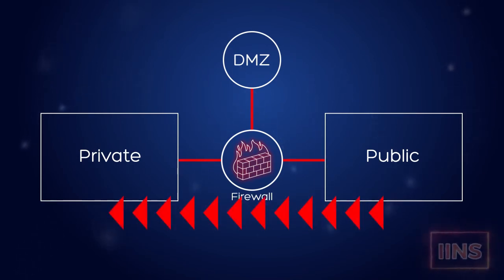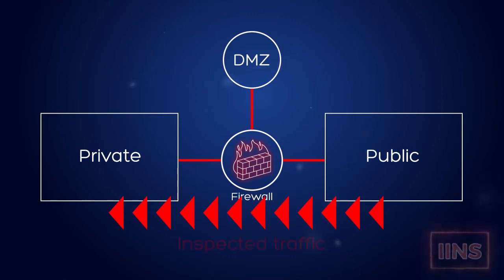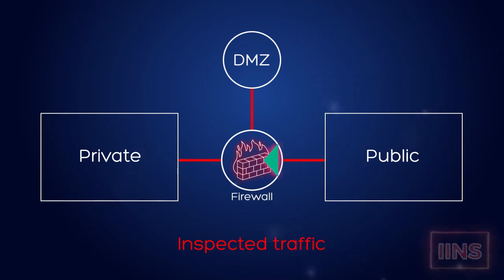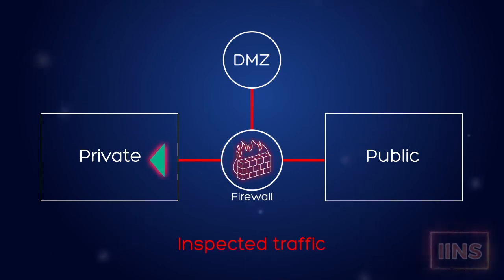From public to private, you might be thinking: if that data is usually restricted, then how do we get responses from websites in the public domain back to our private network? Well, there's a concept we'll cover when we cover firewalls called inspected traffic. Basically, it works this way: you send a web request out, the firewall knows it's you and knows what your request is, so when the data comes back it recognizes it and allows it through because it knows it's waiting for a response. Most other public traffic is not going to be allowed on a private network.